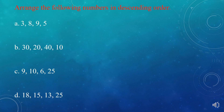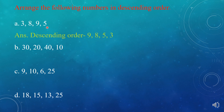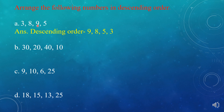There is one more exercise: arrange the following numbers in descending order. Descending order means we write the numbers in decreasing order — biggest number first, then smaller, then smaller. The first one is: 3, 8, 9, 5. The descending order is 9, 8, 5, 3.